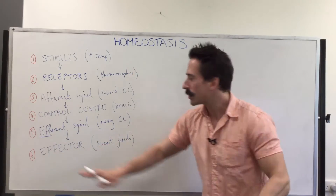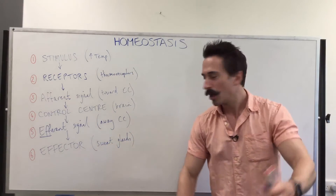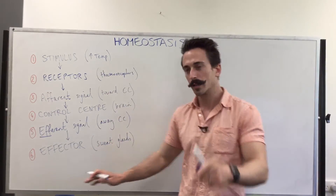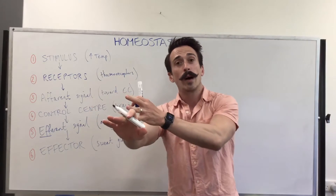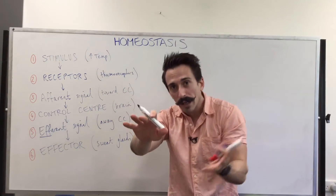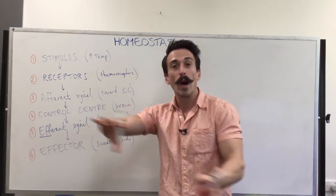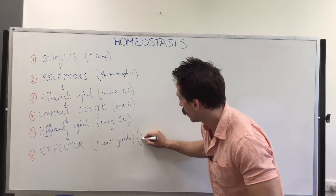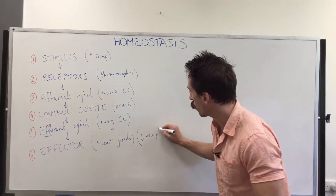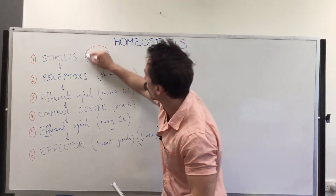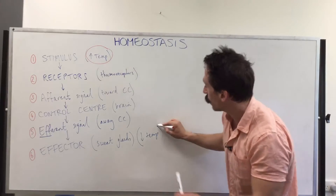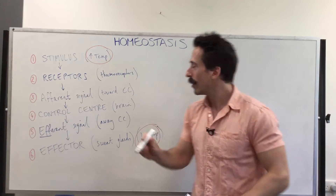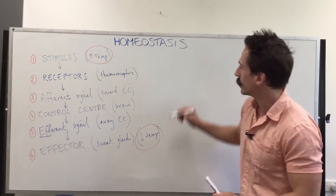The effector eliciting the change — being sweating — what is the ultimate outcome of this whole process? If you sweat, the wind or breeze comes past, takes the heat radiated out through your sweat away from the body, and your body temperature drops. So the outcome here is a drop in temperature. The stimulus was a rise in body temperature; the outcome was a drop in body temperature. This is what we call negative feedback in homeostasis.